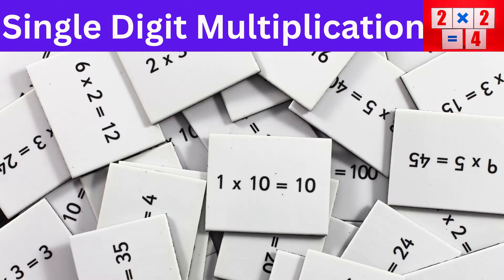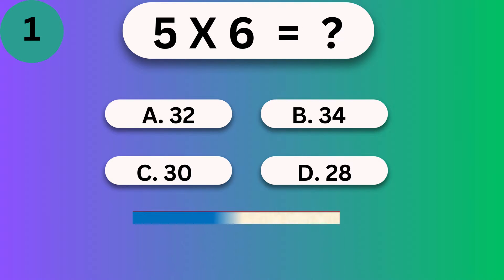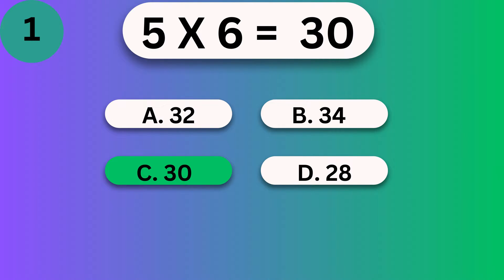Let's learn about single-digit multiplication. 5 times 6. 5 times 6 is 30.